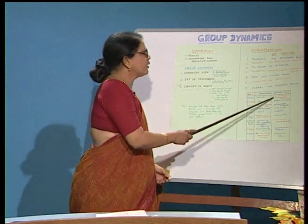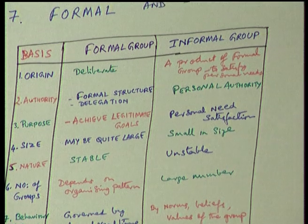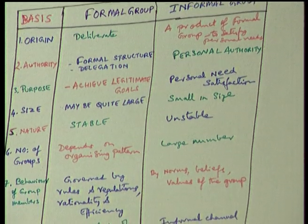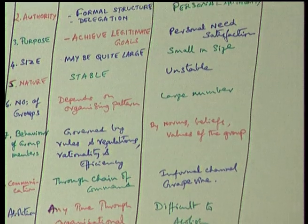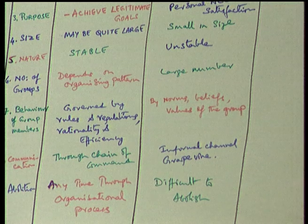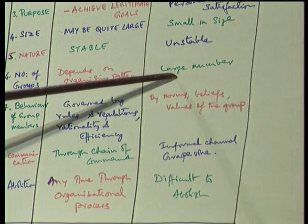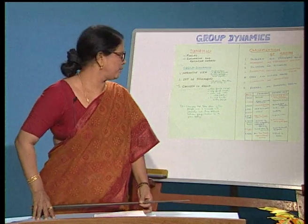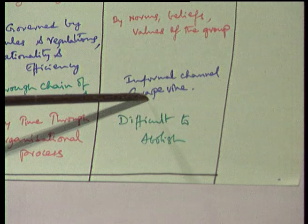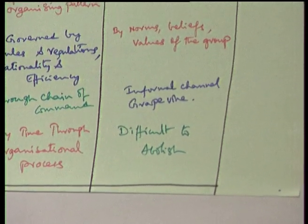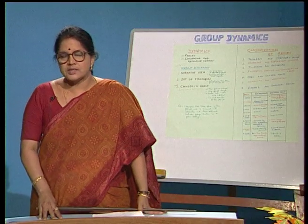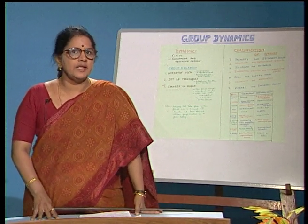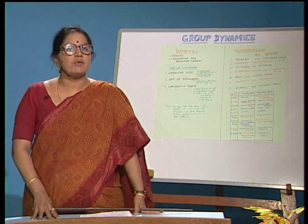Informal groups, being a product of formal groups, exercise only personal authority and come into existence for personal need satisfaction. They are generally small in size and unstable because we do not know when a member may leave. The number of such groups may be large. It is the norms, beliefs, and values of the group which govern members' behavior, and they generally make use of the grapevine — that is, the informal channel of communication. Ultimately, it is difficult to abolish an informal group, because as long as the group satisfies the personal needs of members, they remain.